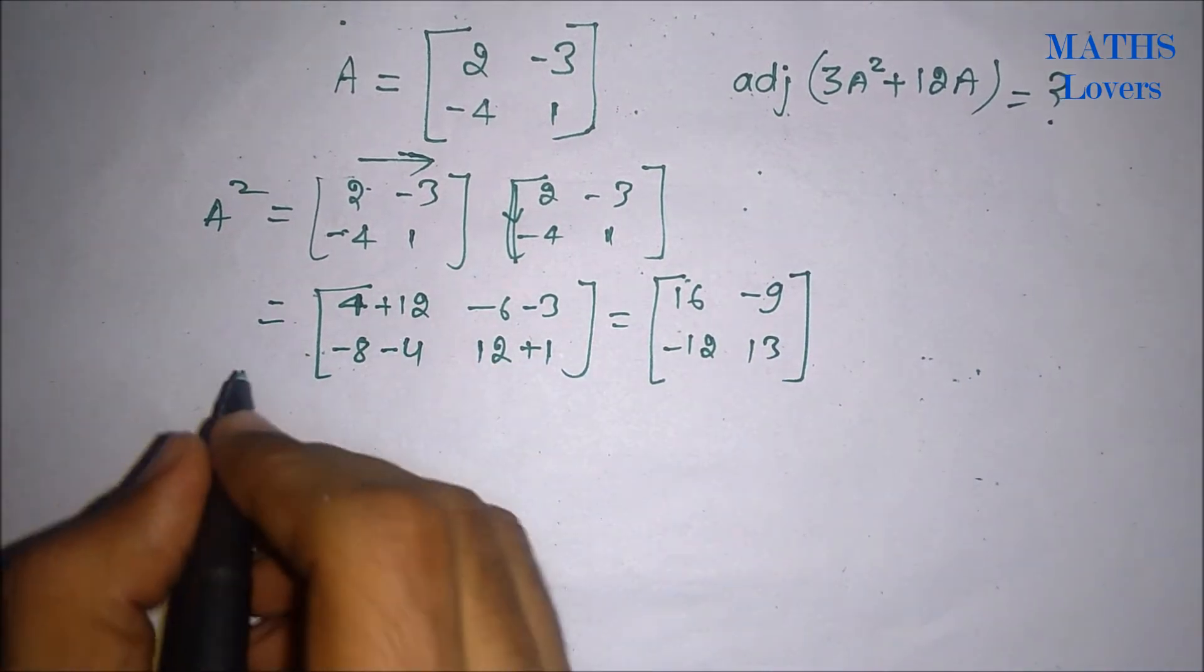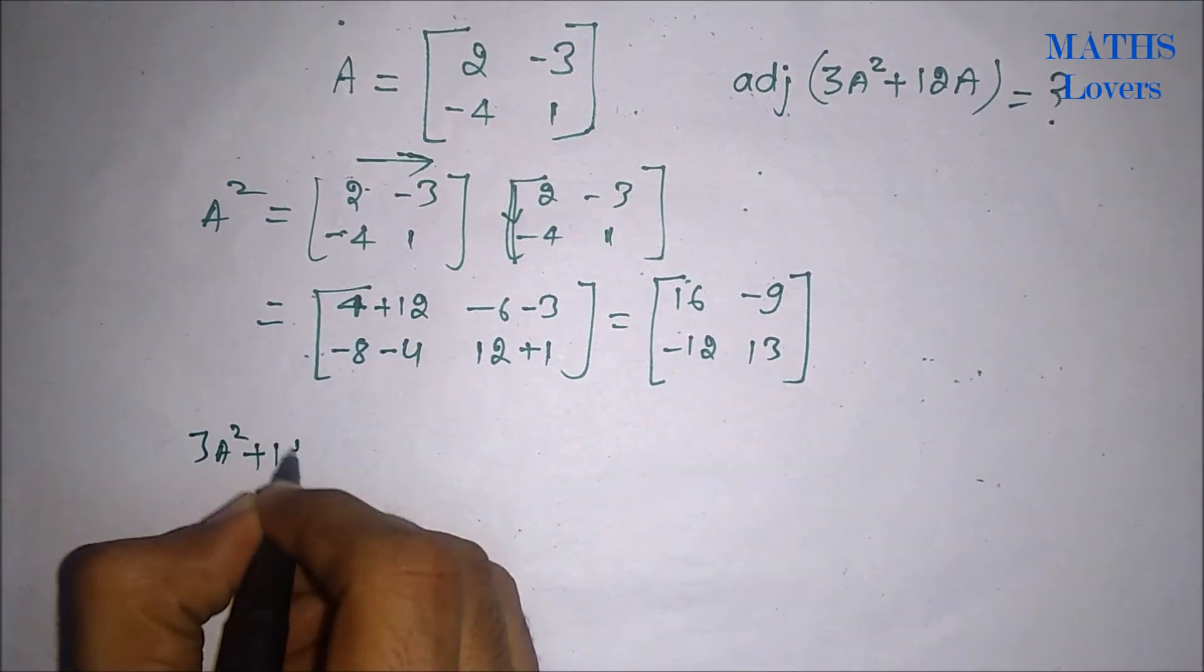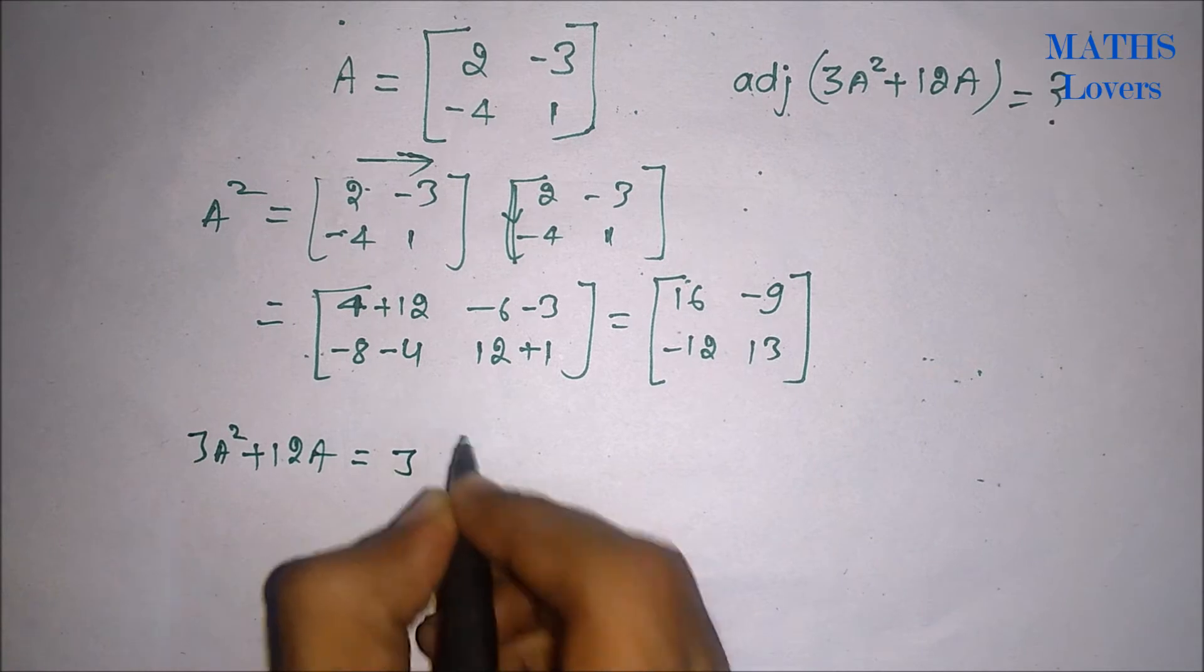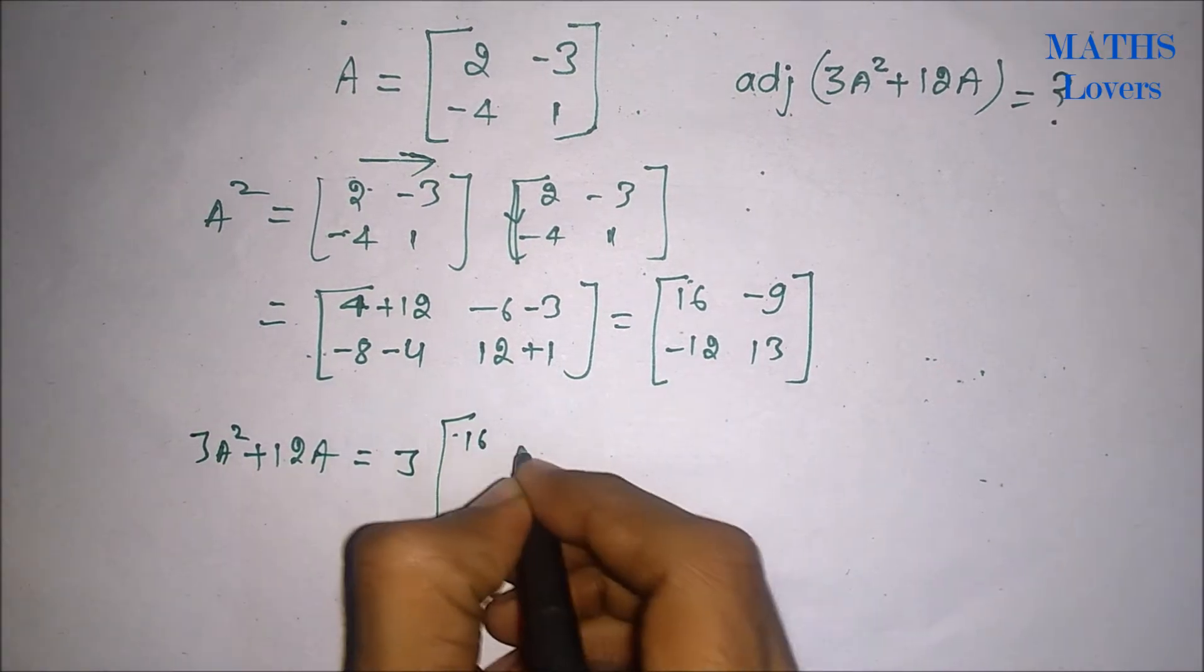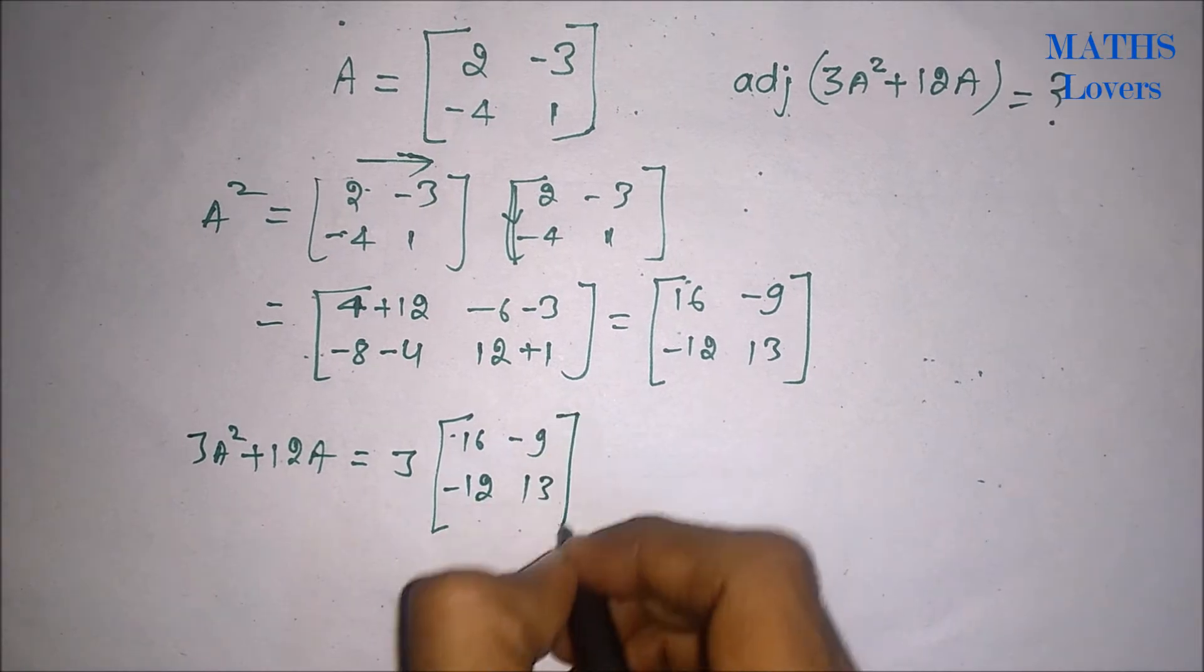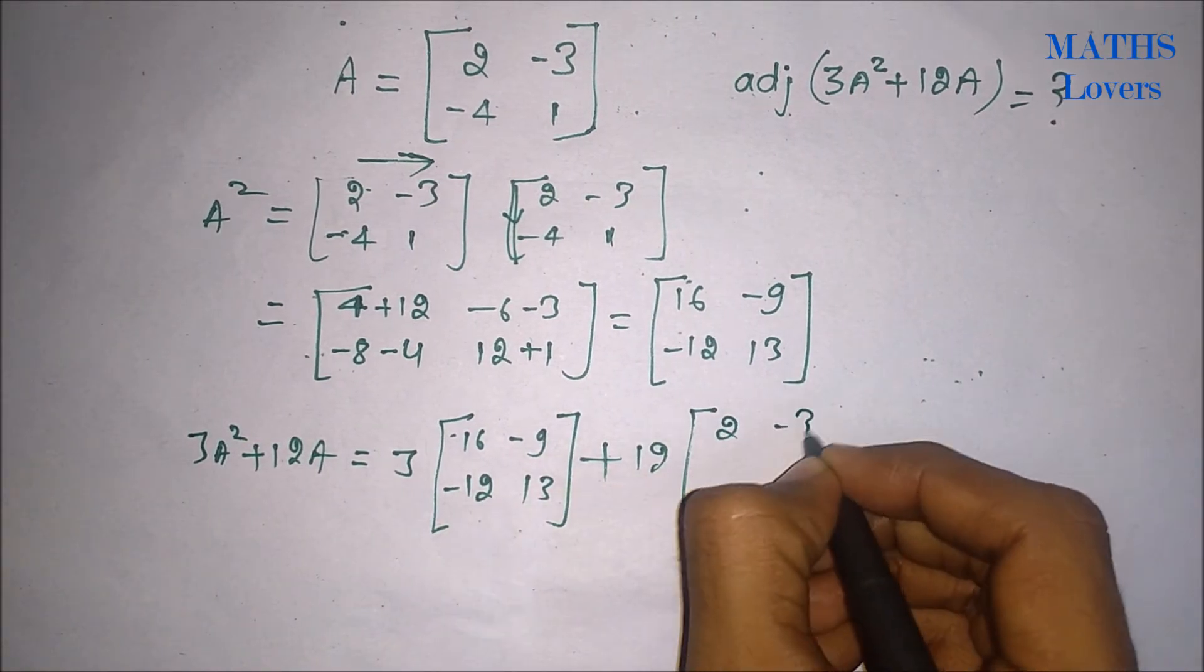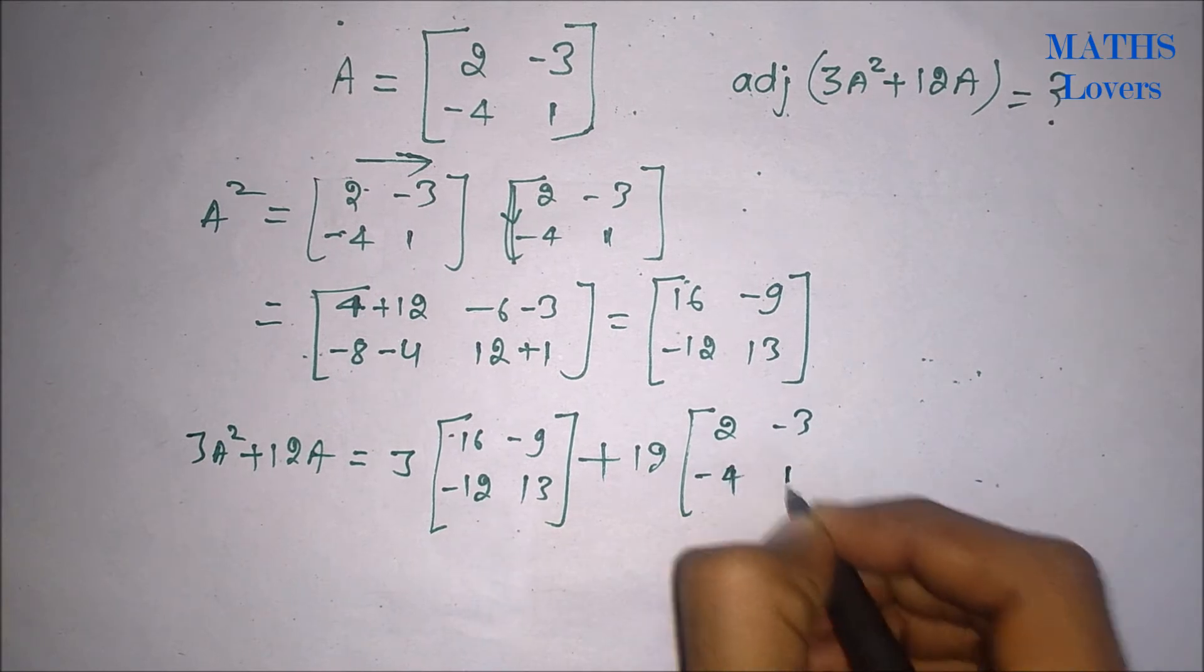Now we will find 3A squared plus 12A. For that we will write 3 times A squared, we know that's 16, minus 9, minus 12, 13, plus 12A which is 12 times 2, minus 3, minus 4 and 1.